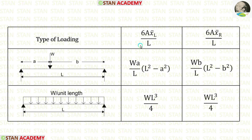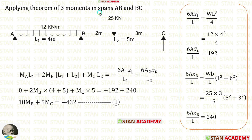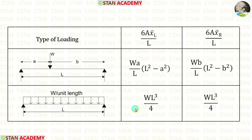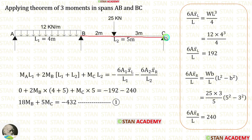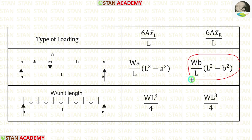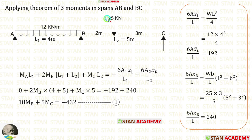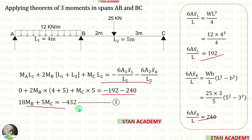Alternatively, using shortcut formulas, we can easily find 6Ax̄ left/L and 6Ax̄ right/L. In span AB with UDL for the full span, we calculate 6Ax̄ left/L using the formula WL³/4. Here W is 12 and L is 4, giving 192. For span BC, we calculate 6Ax̄ right/L using the formula WB/L × (L² − B²). Here W is 25, B is 3, L is 5, giving 240. Applying these two values in the equation, we make the first equation.